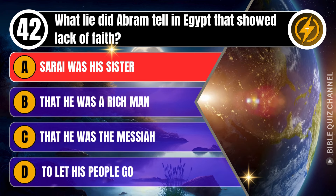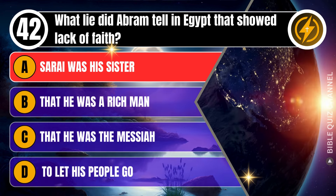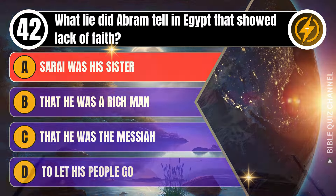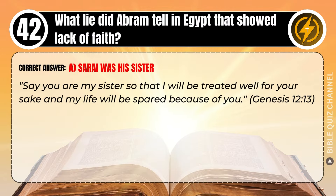Correct answer: A. Sarai was his sister. Explaining the Bible — 'Say you are my sister, so that I will be treated well for your sake, and my life will be spared because of you.' Genesis, chapter 12, verse 13.